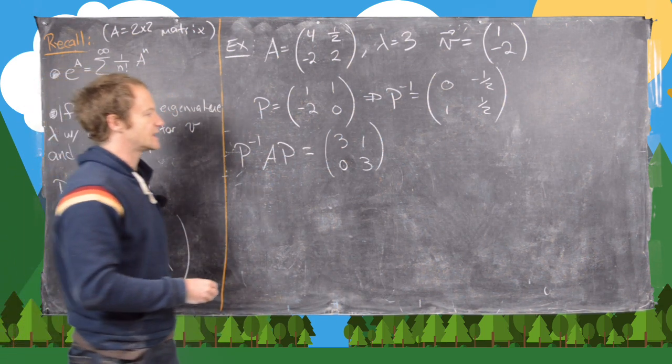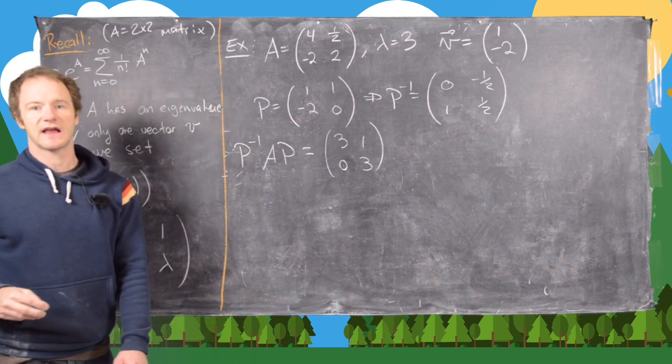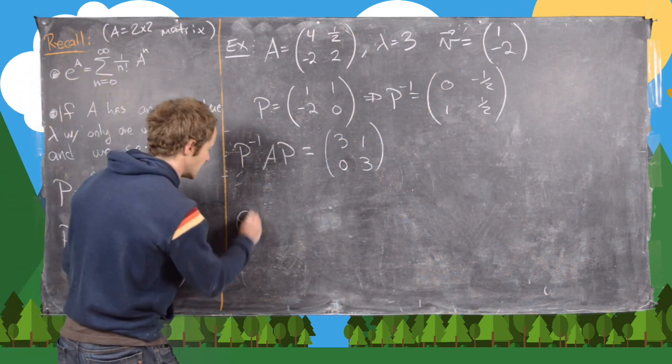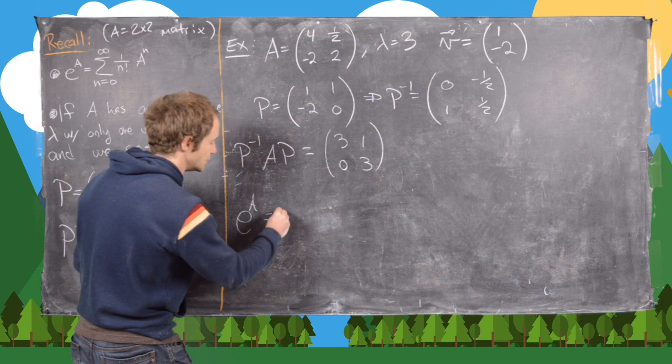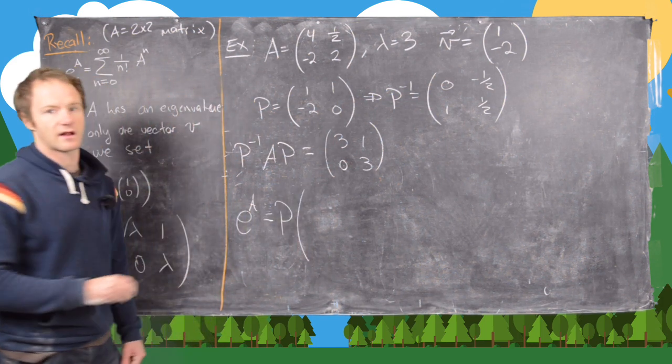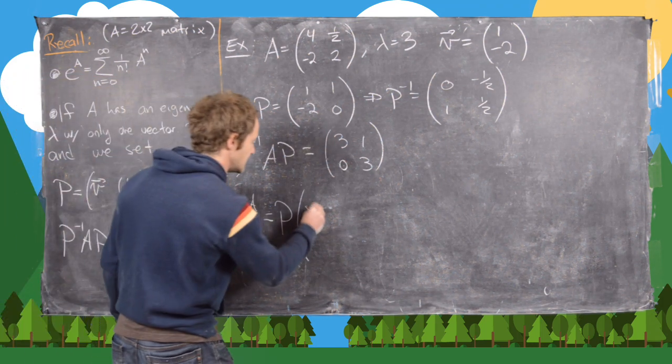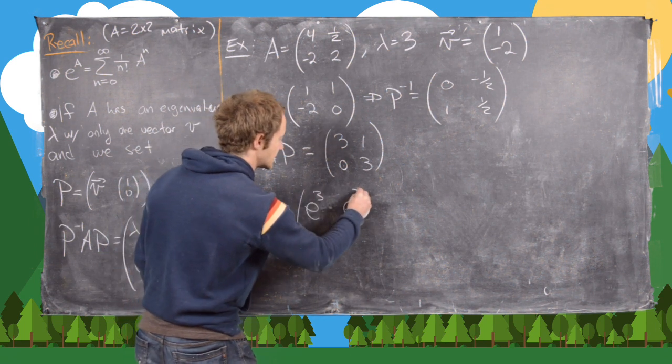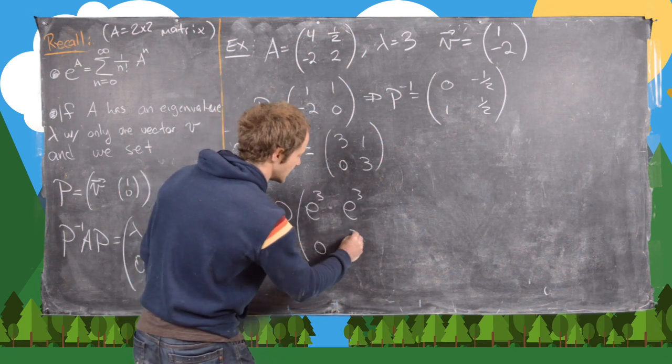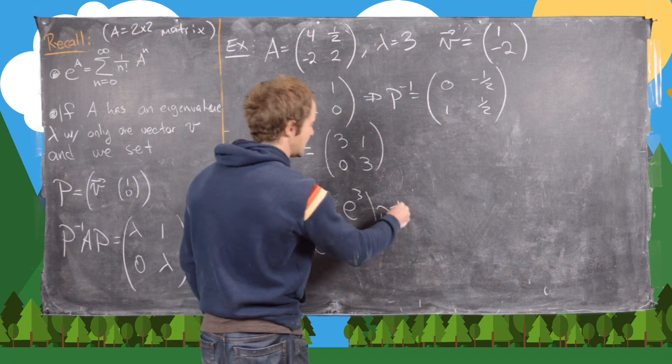Now the next thing that we can do is use this to find our matrix exponential. So we know that e^A is equal to P, and then from what we calculated on a couple boards ago, this is going to be [e³, e³; 0, e³], and then finally P inverse.